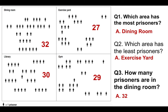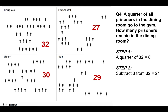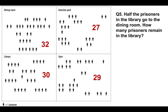Moving on to questions based on the same situation. Question four: a quarter of all prisoners in the dining room go to the gym — how many remain in the dining room? A quarter of 32 is 8, so subtract 8 from 32 and we get 24. Question five: half the prisoners in the library go to the dining room — how many remain in the library? Half of 30 is 15, so the answer is 15.